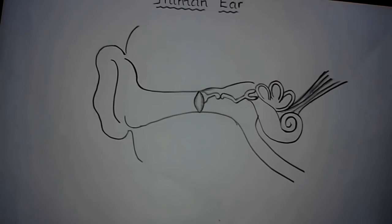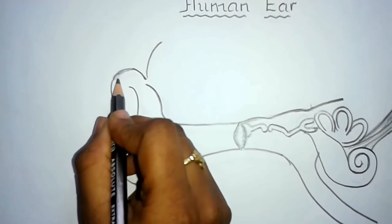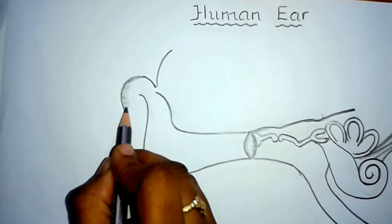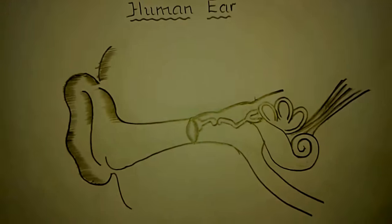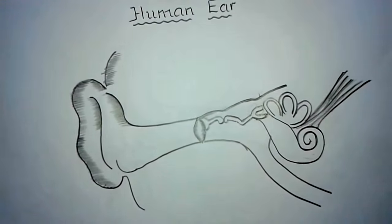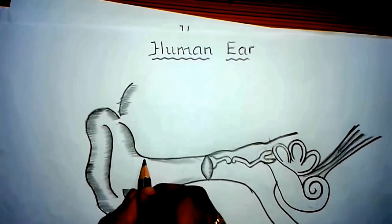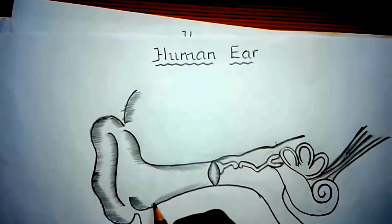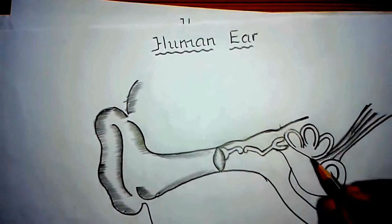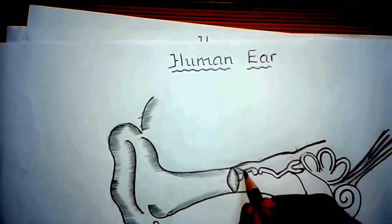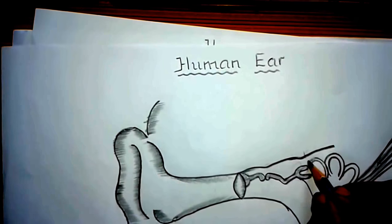So this is the structure of the ear. Now let us make it more beautiful by shading like this. Shade the pinna like this to get the 3D dimension. Draw the hairs in the auditory canal which prevent organisms and dust from entering. Wax produced in the auditory canal entangles the dust. Just shade the three bones — malleus, incus, and stapes — and the semicircular canals.